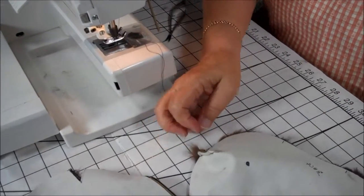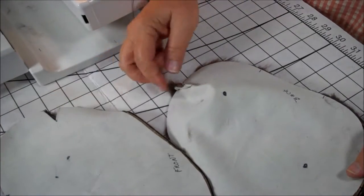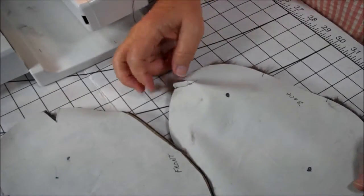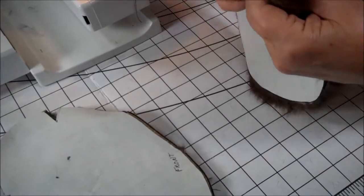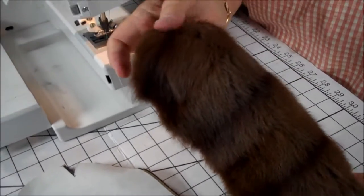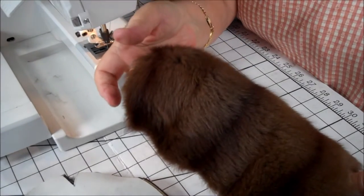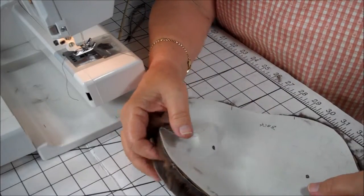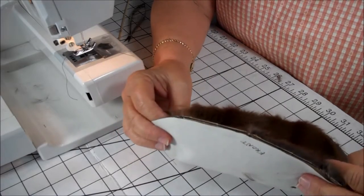As you can see, I've stitched the V closed, which is actually the dart. This is where the top of the head is and the shoulders. Now we're ready to pin the two sides together.